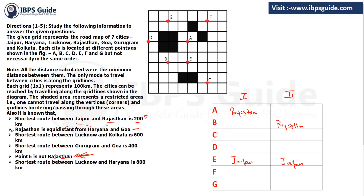Next clue: Rajasthan is equidistant from Haryana and Goa. For Case 1 where point A is Rajasthan, we need two points equidistant from A. E can't be one since it's already Jaipur. Distance from A to B is 400 kilometers, but there is no other point 400 kilometers from A. Distance from A to C is 600 kilometers — checking if any other point is also 600 from A.